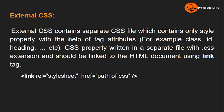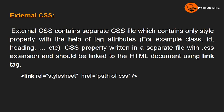External CSS means creating a completely separate CSS file saved with a .css extension. This file is then linked to the HTML page using a link tag in the HTML file. The link tag uses the relation attribute set to stylesheet and the href attribute set to the path of the CSS file.